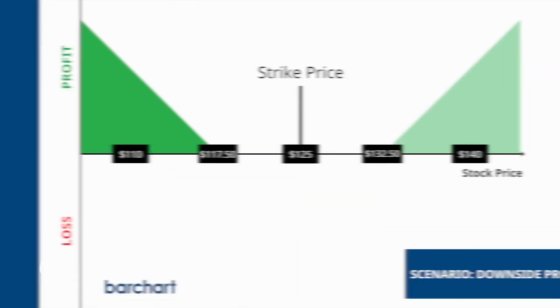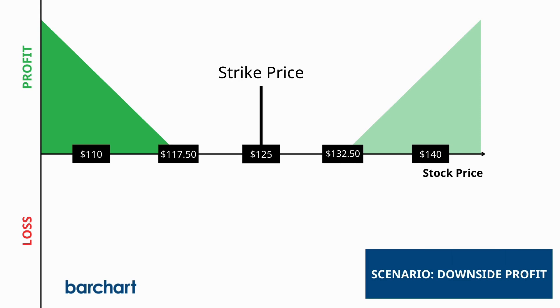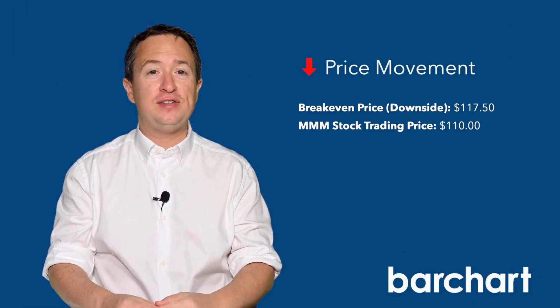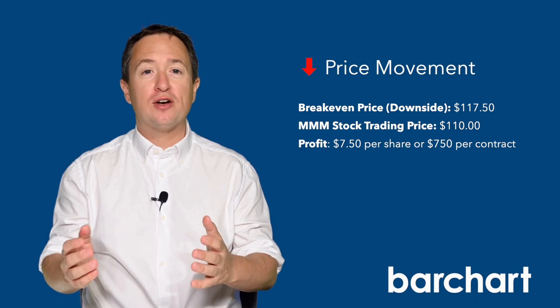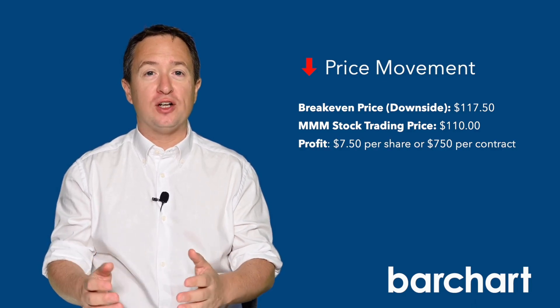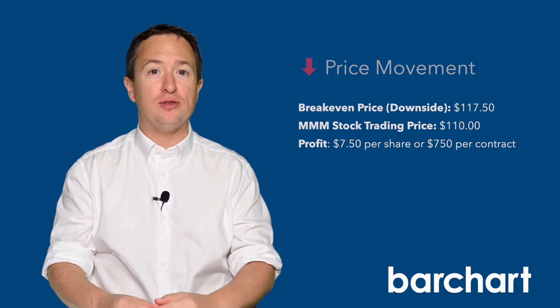On the other hand, if 3M's stock price drops to say $110 on September 10th, you can also exercise your long put instead and net $7.50 per share, or $750 per long straddle that you bought. And just like the long call, you can sell the long put for more than the intrinsic value because the option still has time value remaining.